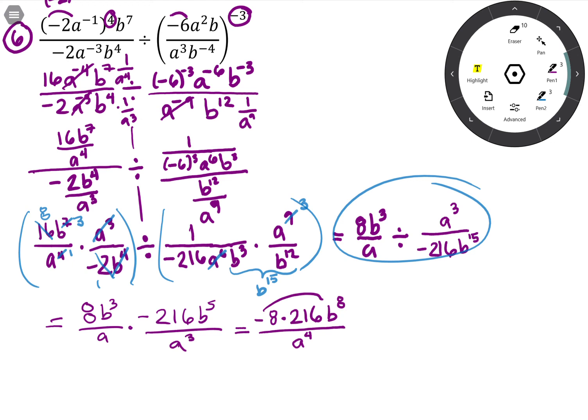It's always fair to say that b to the -4 is the same as 1 over b to the 4, or whatever it is. All right, thanks for watching.